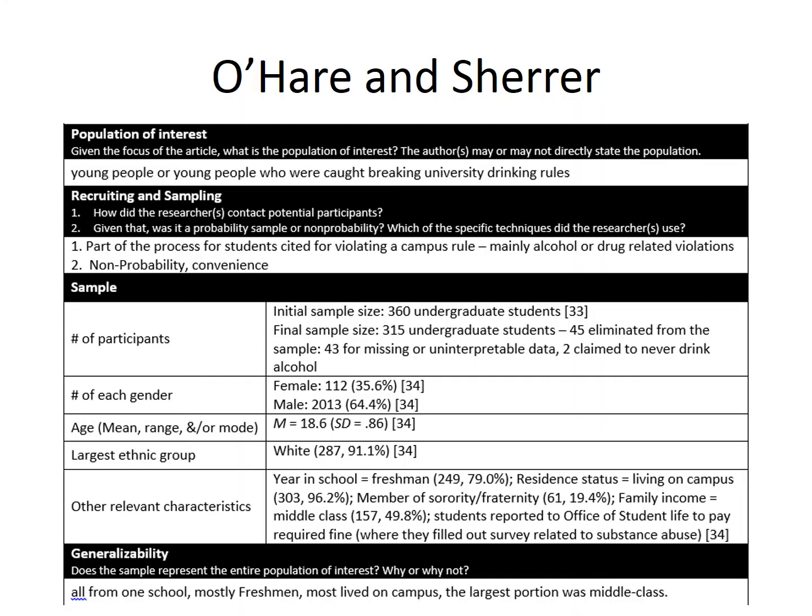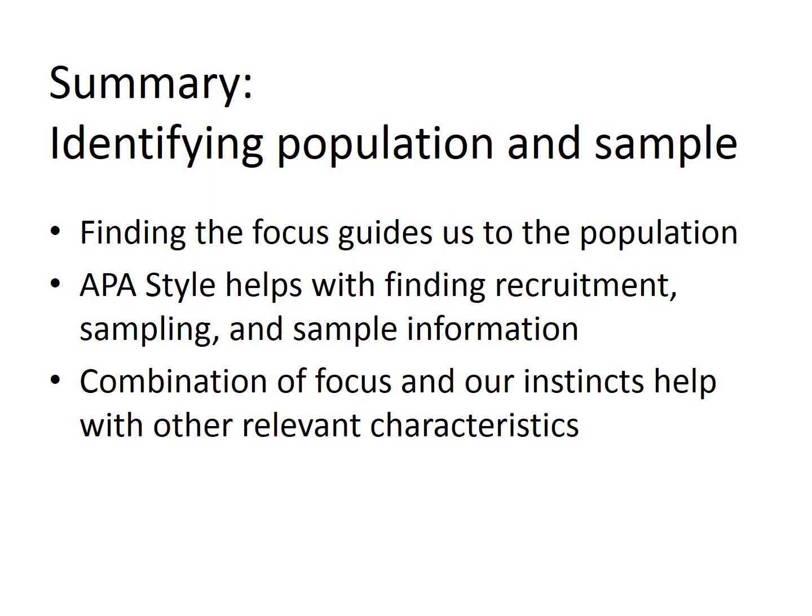Here's the model for the worksheet. To wrap this up, we might note three things: finding the focus helps us identify the population, and APA style helps with finding information about recruitment, sampling, and the characteristics of the sample. When looking at the characteristics of the sample, some information should be relatively standard, but thinking about the focus can help us think about other characteristics that might influence the results.